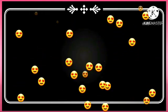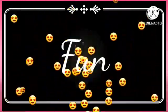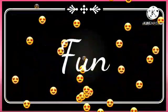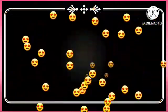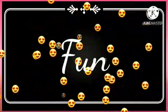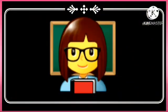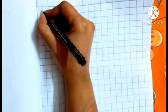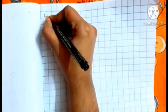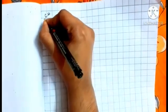So now we will start our fun activity with different kinds of shapes and objects. Get ready with your copy, pencil and eraser. At first we have to write here CW and date.